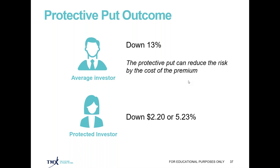Let's assume the shares dropped from $42 down to $36.50. As the investor, you're down $5.50. The put option bought at $2.20 is now worth $6, so the value of that option contract is based on the difference between the share value and the strike price.